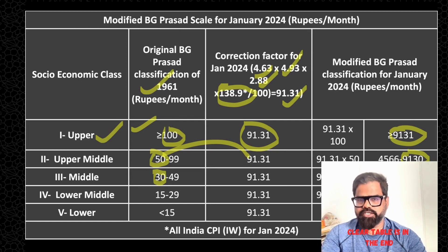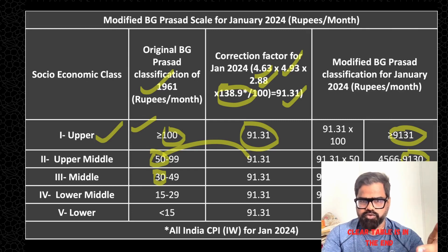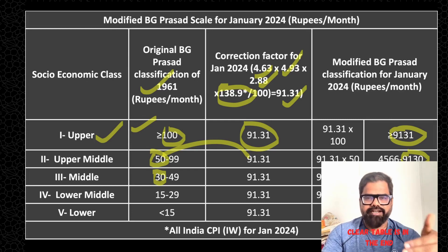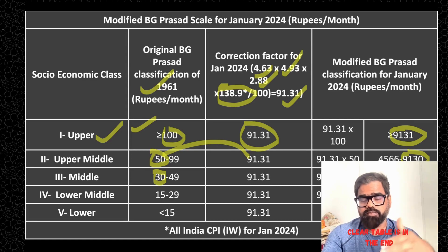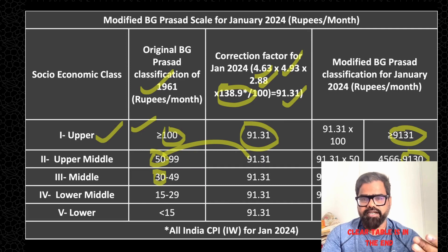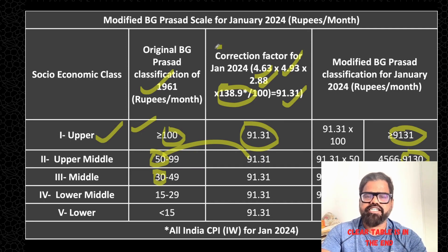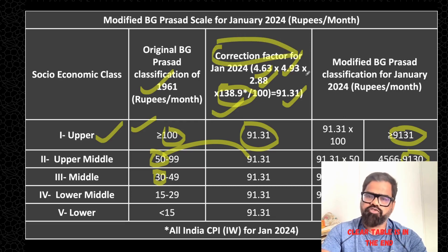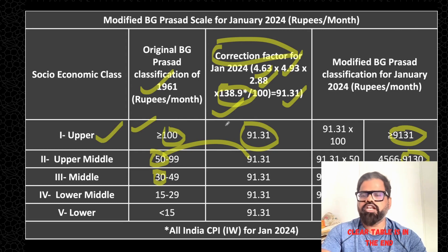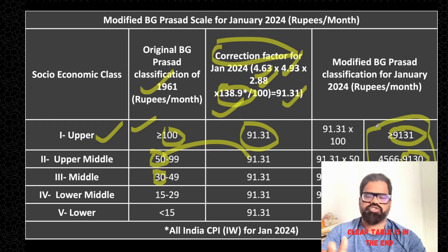Suppose you are in June 2024 and you have the CPI for Industrial Worker for April 2024 — for example, 140. The only thing you need to change is the correction factor calculation. If you know how to calculate the correction factor, you simply multiply and get the updated values, which you can use in your fieldwork.